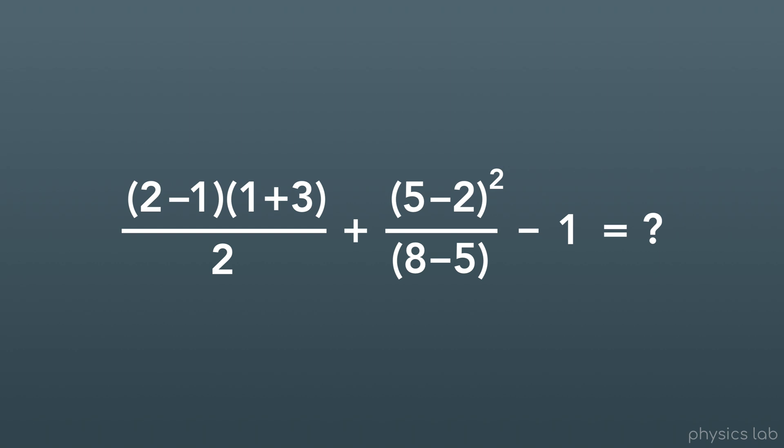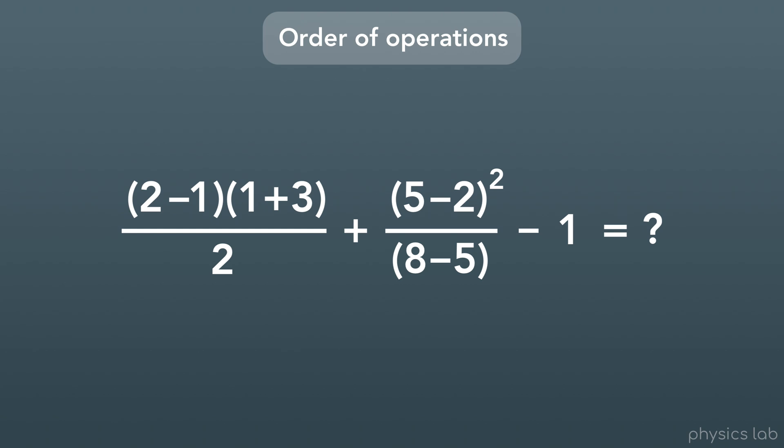So we know what the operations are and what they look like. But say we're given an equation and we have to start doing the math — where do we start? Do we work left to right, or start with what looks easier? There's actually an agreed-upon set of rules for what order you're supposed to do the math, called the order of operations. This exists so that anyone looking at the same math will get the same answer.